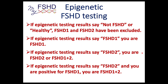If you get your epigenetic testing results — promoted by MyFSHD and done by the Jones Lab at UNR — and your results say 'not FSHD' or 'healthy,' that means FSHD1 and FSHD2 have both been excluded, because this testing tests for both at the same time. If the results say FSHD1, then you're FSHD1 because the FSHD2 epigenetics have been excluded. This is research testing, not a clinical diagnosis, but if it says 'not FSHD' or 'healthy,' that's solidly correct. If it says FSHD1, it's clearly not FSHD2.